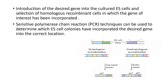The gene-targeted insertion will contain the neomycin resistance gene along with the embryonic stem cell DNA. The random insertion will contain both selection genes — the neomycin resistance gene and the thymidine kinase gene.